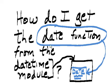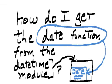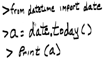How do I get the date function from the datetime module? from datetime import date. How do I get today's date? a = date.today(), then print a.